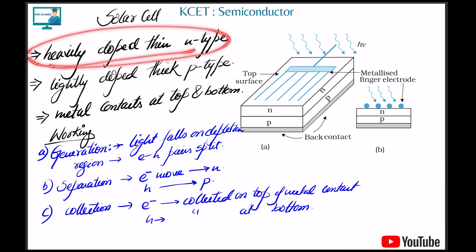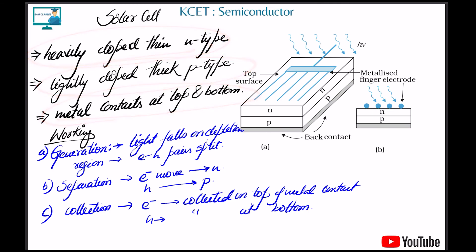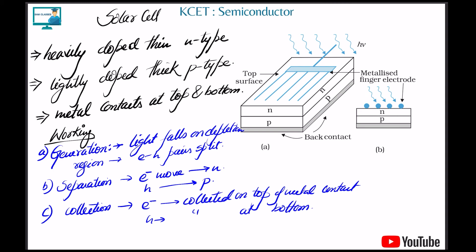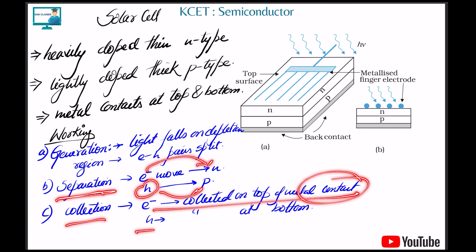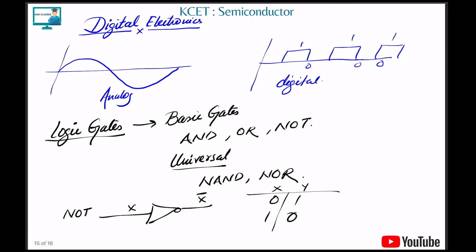A solar cell is heavily doped with n-type and lightly doped with p-type, with metal contacts at the top and bottom. It works in three stages: generation — light falls on the depletion region and generates electron-hole pairs; separation — electrons move to n-side and holes move to p-side; collection — electrons are collected at the top metal contact and holes at the bottom.